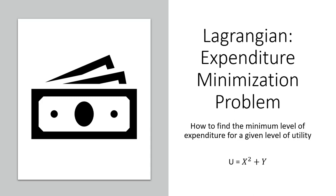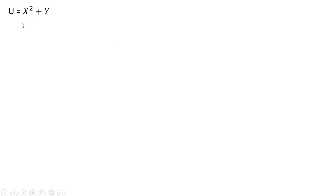We're going to use this utility function. Here's our utility function. This is a quasi-linear utility function. One variable enters in a non-linear manner, the other in a linear manner.